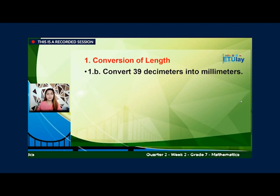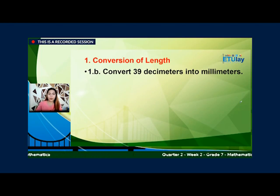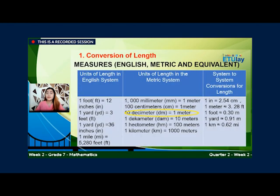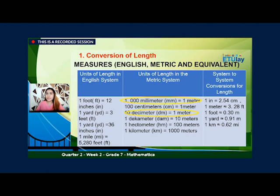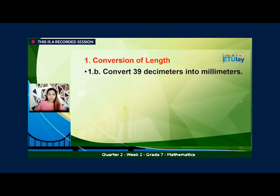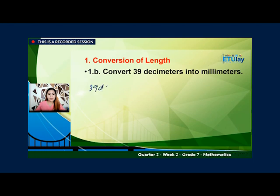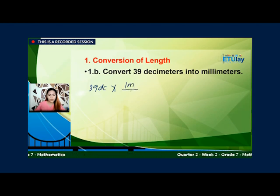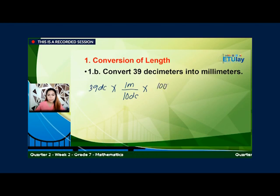Let's have another example. Convert 39 decimeters into millimeters. Balikan natin yung table for equivalent conversions. So makikita natin that 10 decimeters ay equal kay 1 meter, and 1,000 millimeters ay equal kay 1 meter. So yun yung gagamitin nating fraction factors. So write natin: 39 decimeters times 1 meter over 10 decimeters, then multiply by 1,000 millimeters over 1 meter.